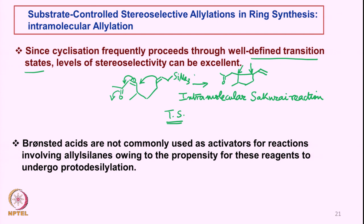In all these cases, a Lewis acid must be used. Very few cases of Bronsted acids have been used because with an allylsilane, what often happens is protodesilylation — the proton reacts with the double bond, leading to proton addition and desilylation of the reagent itself. So the allylsilane does not react with the substrate if a Bronsted acid is used in place of a Lewis acid.